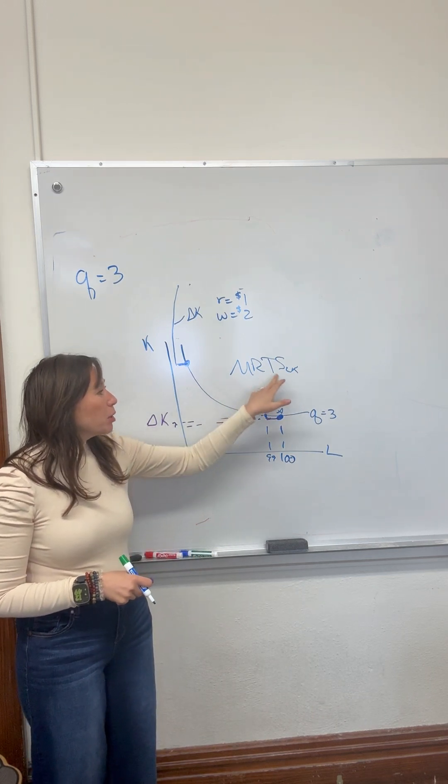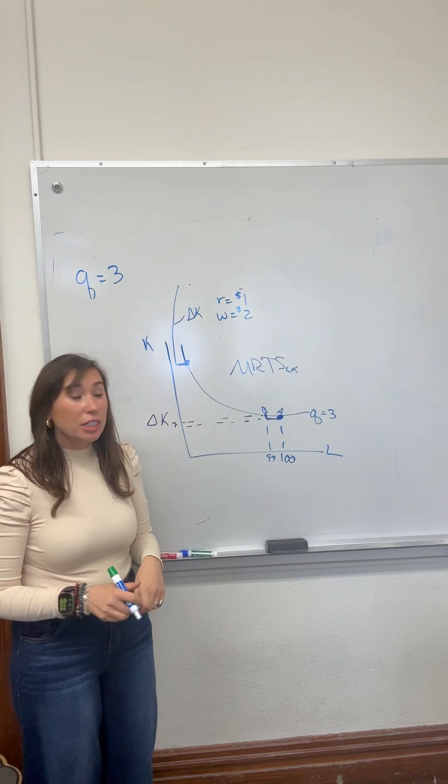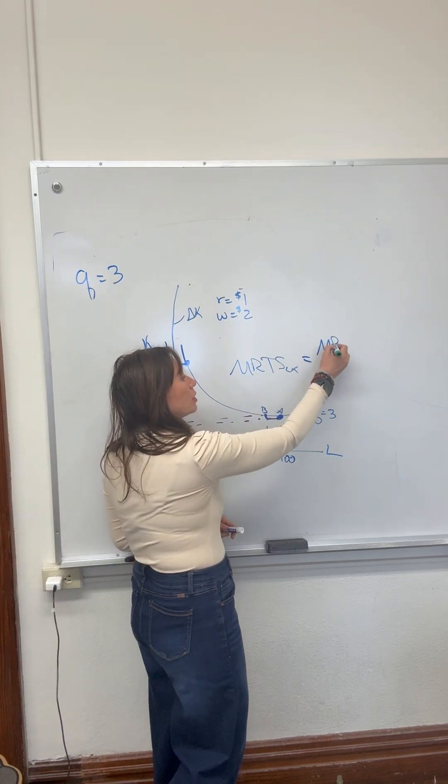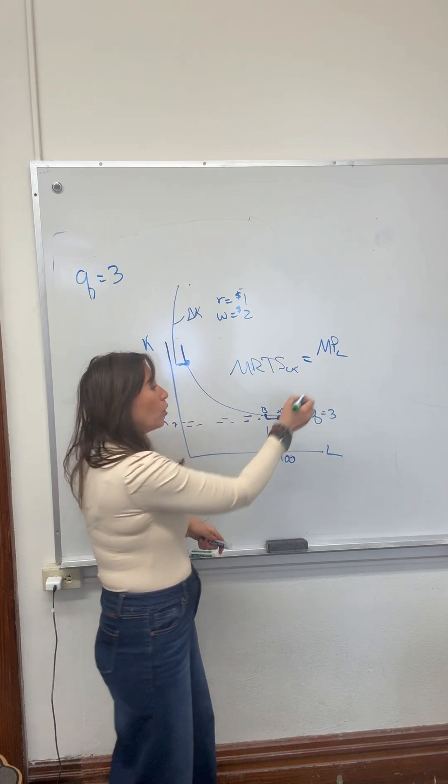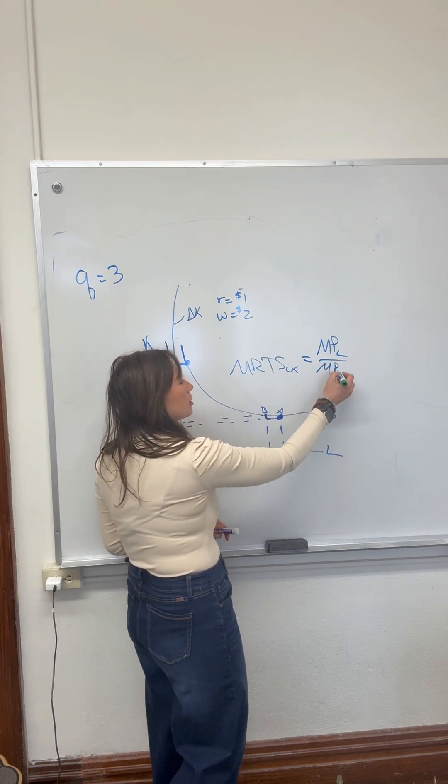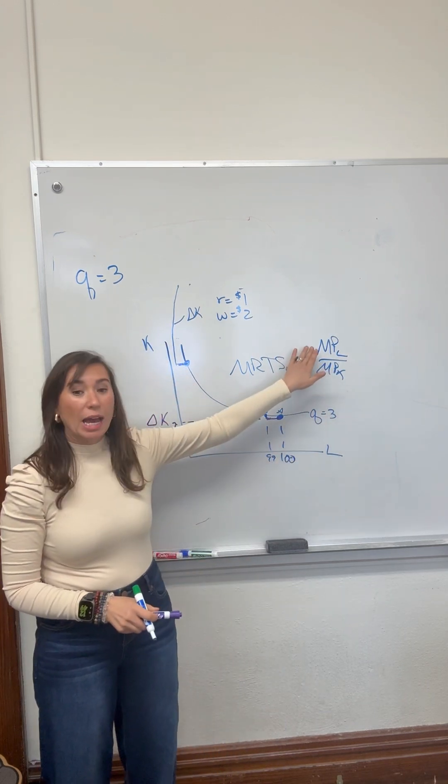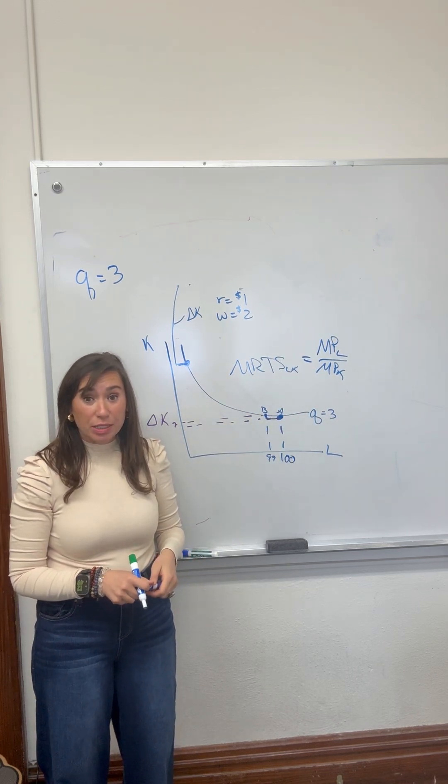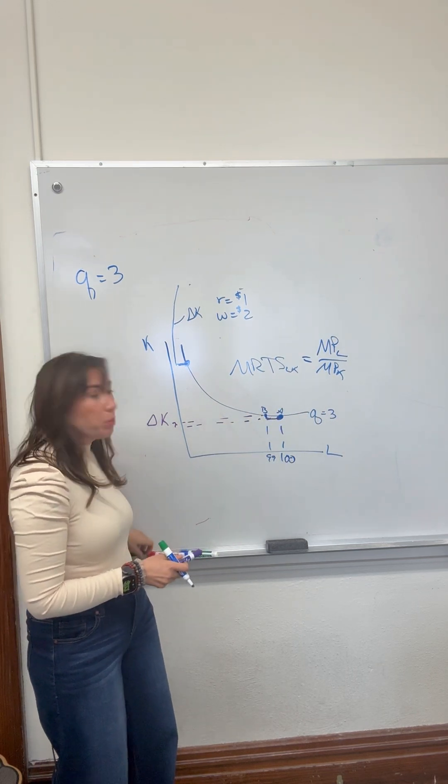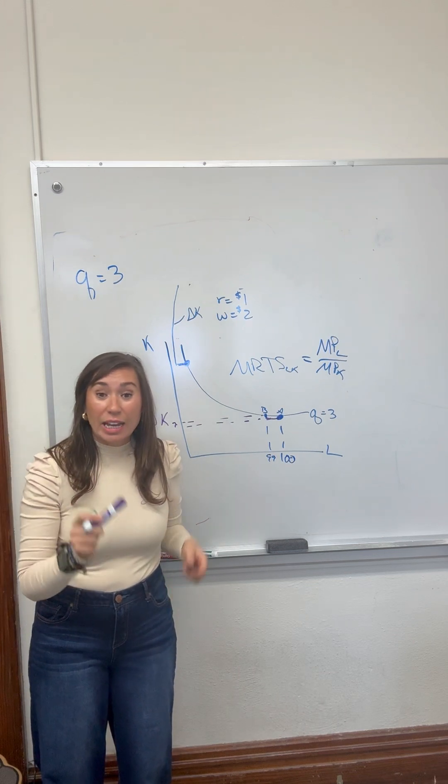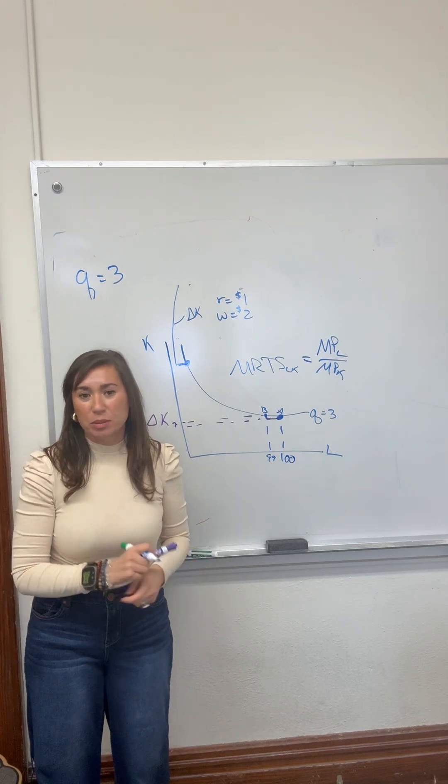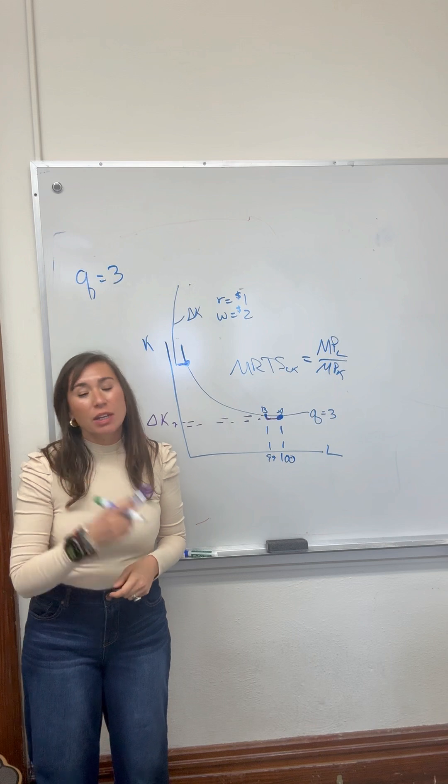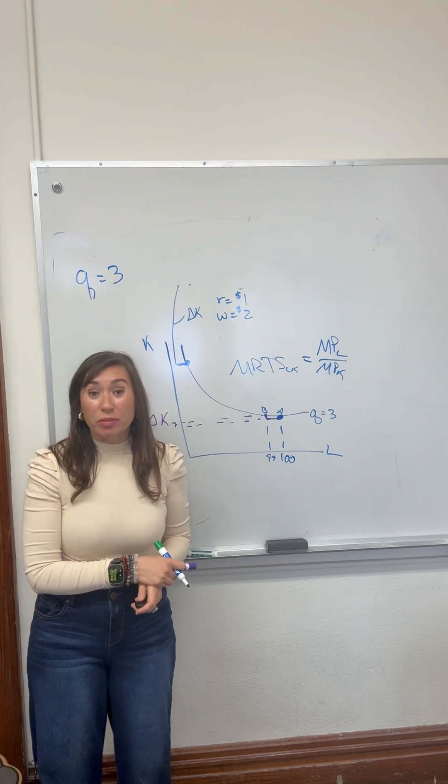The marginal rate of technical substitution is the marginal product of labor over the marginal product of capital, which is how valuable labor is over how valuable capital is. That will be an important part of understanding how to choose the cost minimizing point of production. In our next video, we'll look at the slope of the isocost.